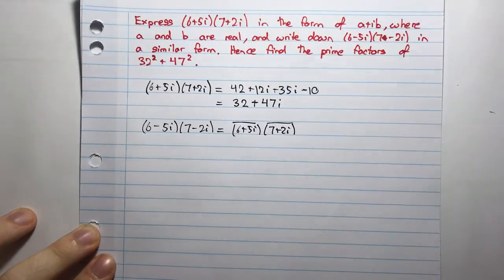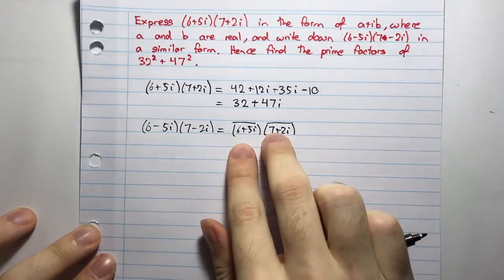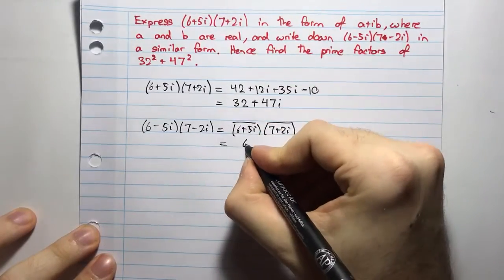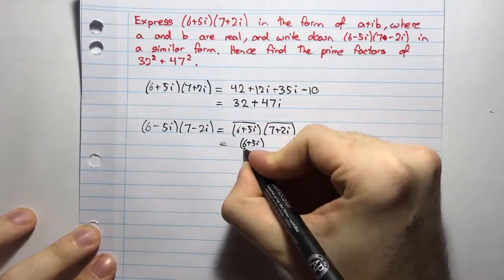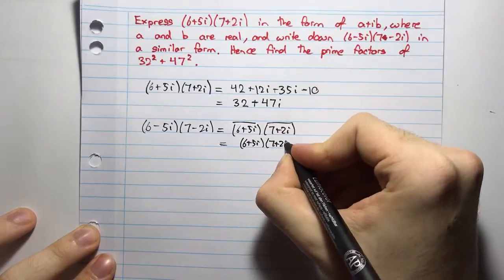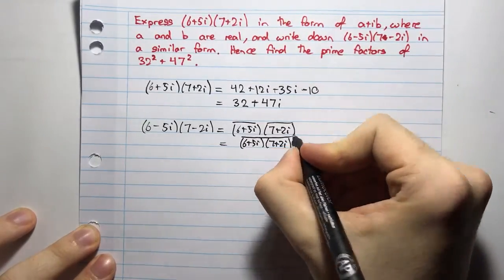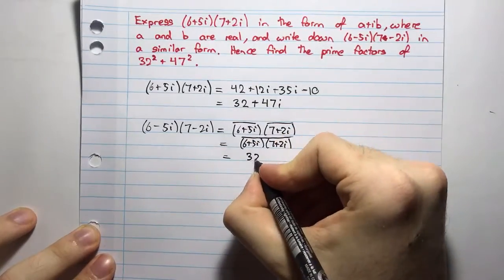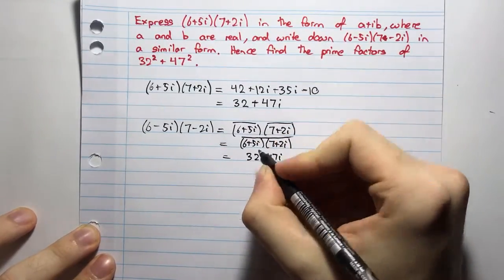And now I know that a conjugate, a product of conjugates, is equal to the conjugate of the product. So, I can say that this is (6+5i)(7+2i), and I'm taking the conjugate of all that. Well, what's this? That's 32 plus 47.